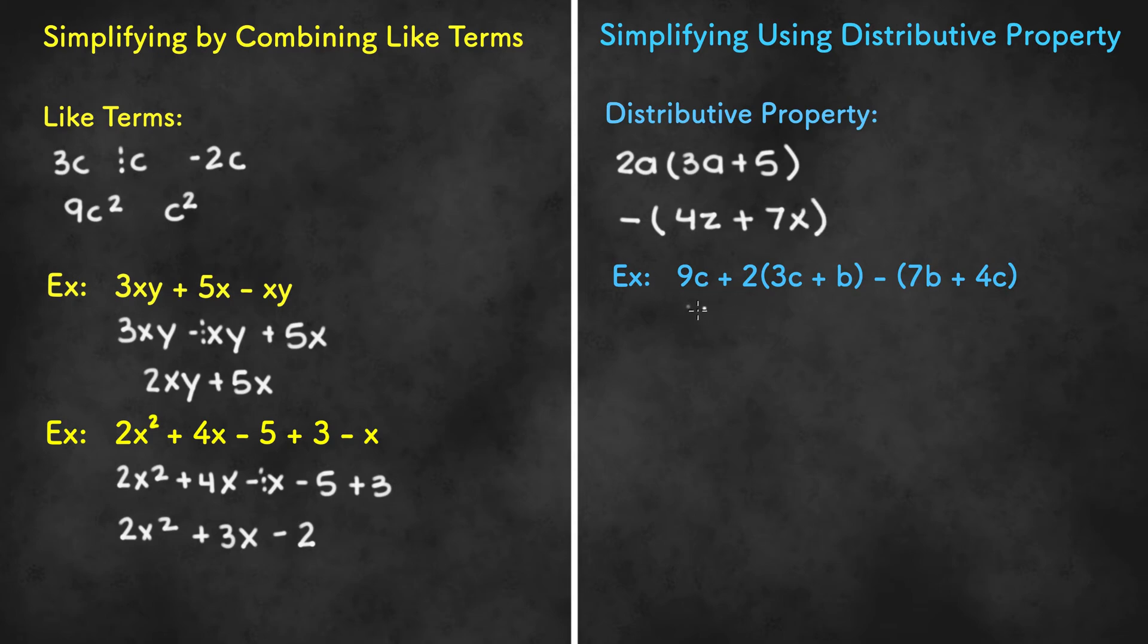When you see an example like this the first thing you need to do is distribute. We have 9c and we have to distribute the 2 to the 3c and to the b. So 2 times 3c is 6c and 2 times b is 2b. And we have another pair of distributive property. So we distribute the negative 1 to 7b and 4c. And we get negative 1 times 7b is negative 7b and negative 1 times 4c is negative 4c.